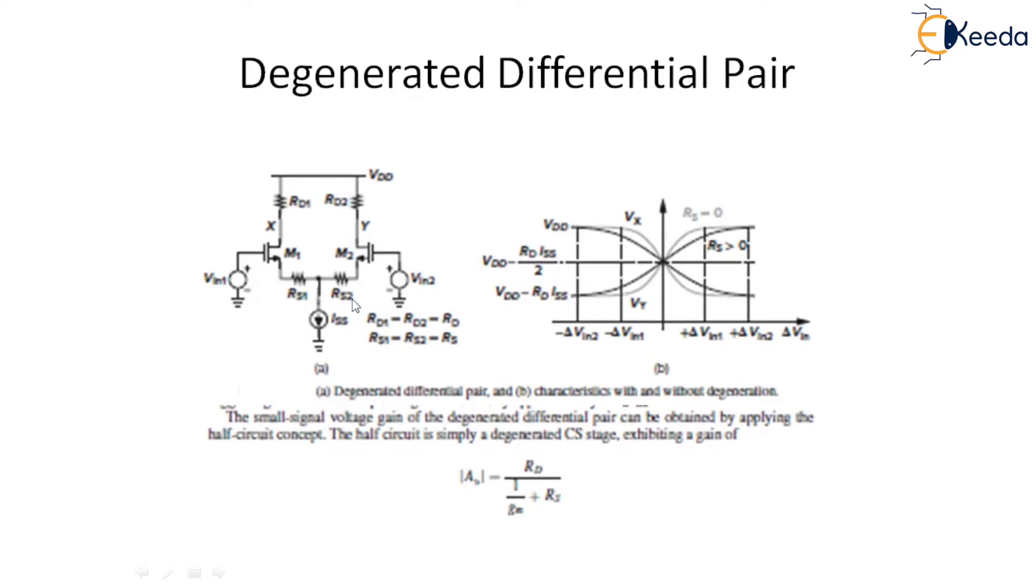This can be seen from the input and output characteristics as shown here. Due to degeneration, the differential voltage necessary to turn off one side increases in magnitude.